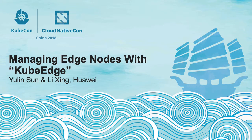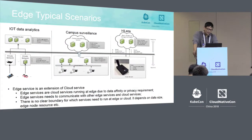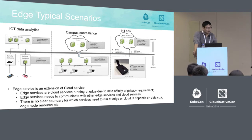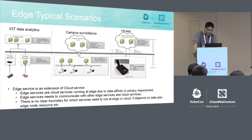Huawei Highlands is a computer node that has AI ability. It includes the ARM core, disk, and memory. It also includes a dedicated chip — the Huawei NPU — which has much more powerful AI ability than a CPU. It also has an embedded camera that can collect video streams.